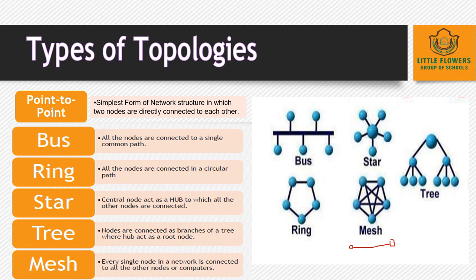In mesh topology, every single node in a network is connected to all the other nodes. Every node not only sends its own signal but also relays data from other nodes. This type of topology can handle a large volume of traffic. It is commonly used in wireless networks, and if one component fails, there is always an alternative path so that data transfer is not affected.